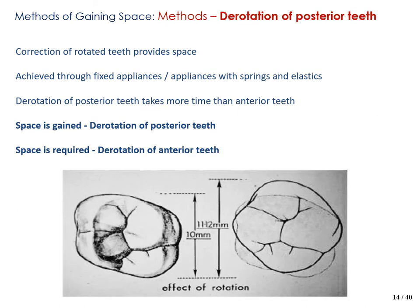The next method is derotation of posterior teeth. Correction of rotated teeth provides extra space within the arch and is achieved through fixed appliances or appliances with springs and elastics. Derotation of posterior teeth takes more time because of the number of roots; however, space is gained when posterior teeth are derotated. Whereas for derotation of anterior teeth, space is required — you must first create enough space for the rotated anterior tooth to be derotated into its ideal position.